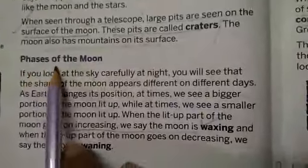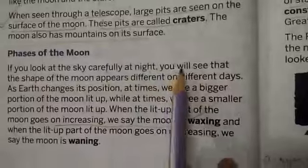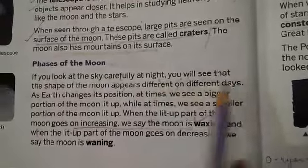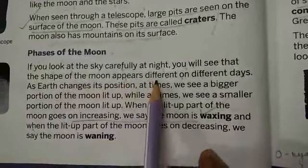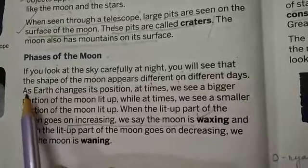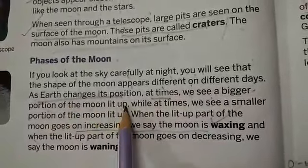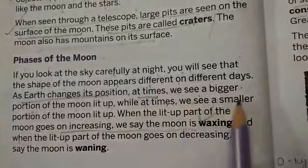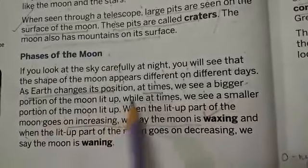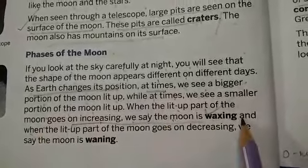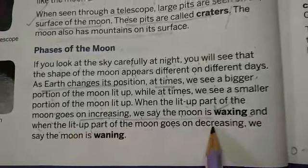The phases of the moon. If you look at the sky carefully at night, you will see that the shape of the moon appears different on different days. This is because as earth changes its position, at times we see a bigger portion of the moon lit up, and at times we see a smaller portion of the moon lit up. When the lit-up part of the moon goes on increasing, we say the moon is waxing.